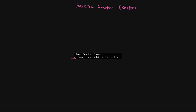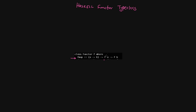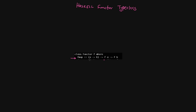Let's first understand the kinds involved. In the fmap signature, a is a concrete type so its kind is star (★), the kind for b is star, the kind for f of a — the actual functor value — is star, and f of b is also star. So all of these are concrete types.